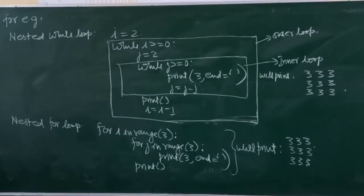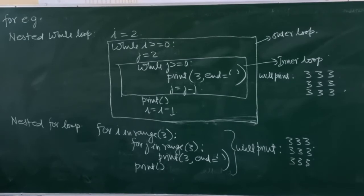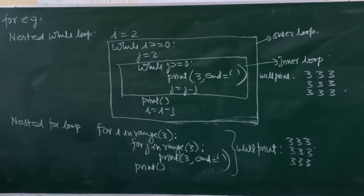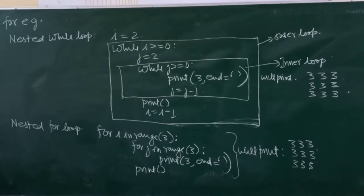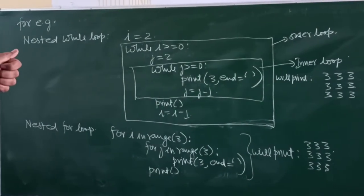In this we are taking the example: we are assigning 2 to i, while i is greater than or equals to 0, j is equals to 2, while j is greater than or equals to 0, print 3,